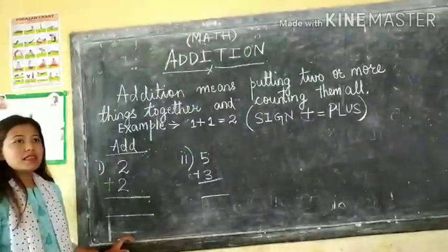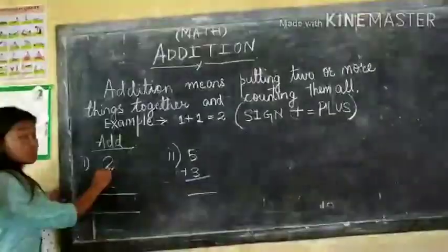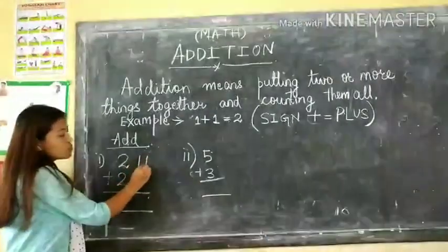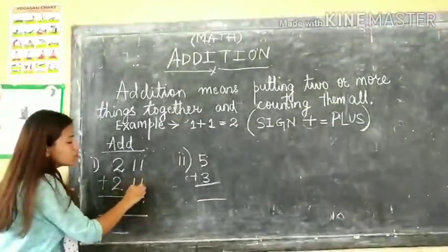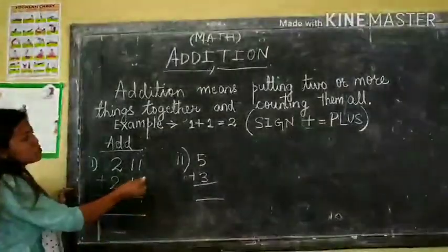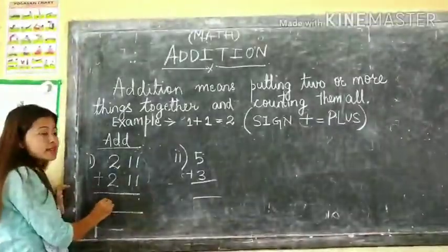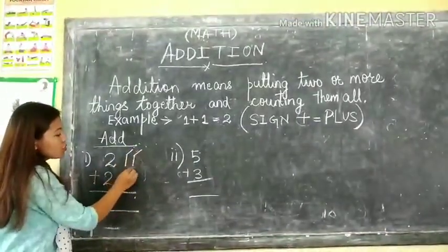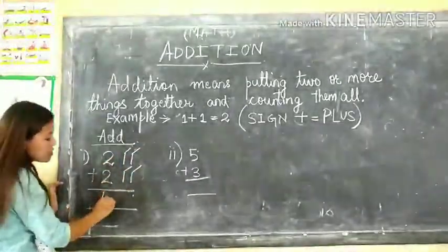Now let's do some problems. This is 2, so let's make 2 lines: 1, 2. And this is also 2, let's make 2 lines here: 1, 2. Now we need to count these numbers together in order to get an answer. Let's count: 1, 2, 3, 4. So 2 plus 2 is 4.